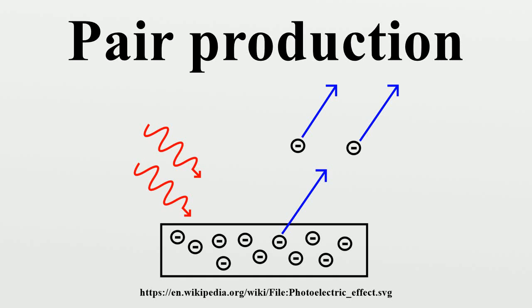Pair production often refers specifically to a photon creating an electron-positron pair near a nucleus but can more generally refer to any neutral boson creating a particle-antiparticle pair. In order for pair production to occur, the incoming energy of the interaction must be above a threshold, at least the total rest-mass energy of the two particles, and the situation must allow both energy and momentum to be conserved.